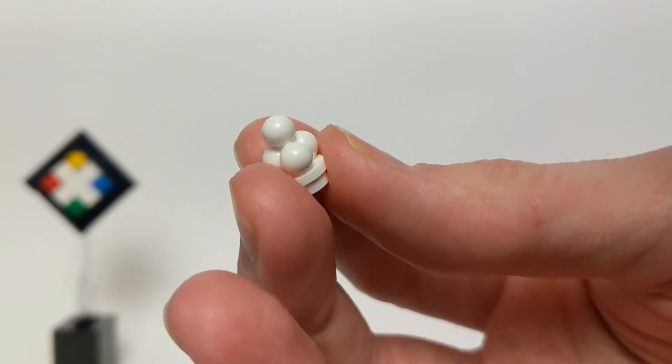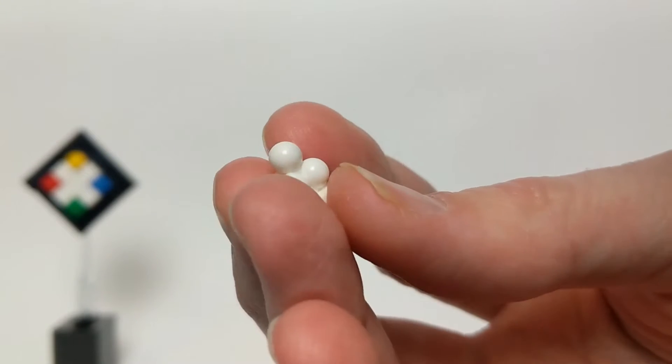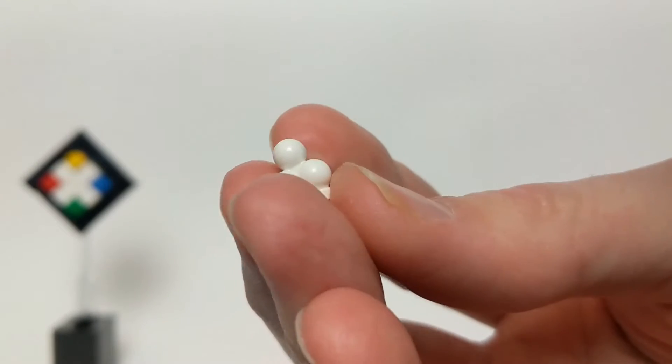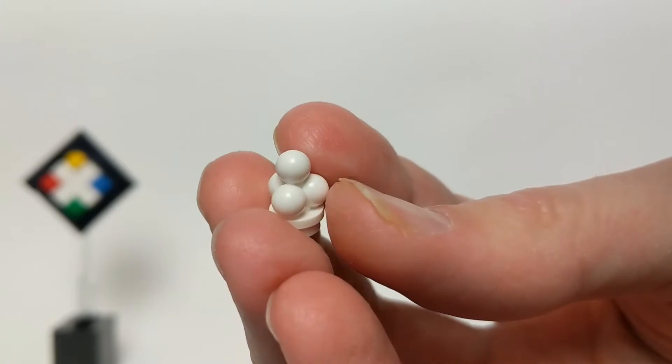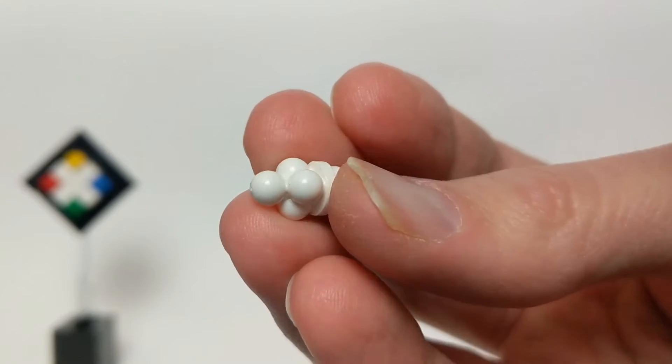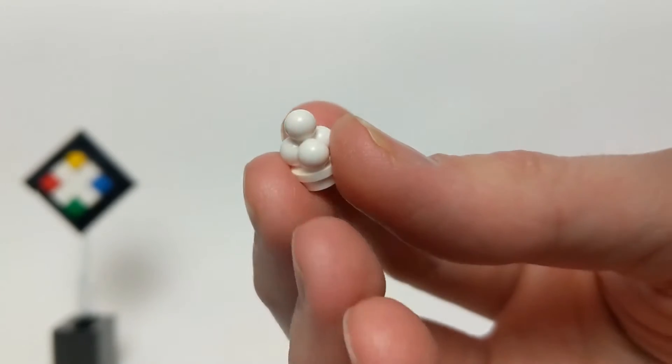Even tinier pieces can be represented by the little ice cream scoop slash cloud bubbly sort of piece. It has four small balls stacked in a pyramid.